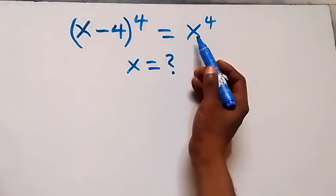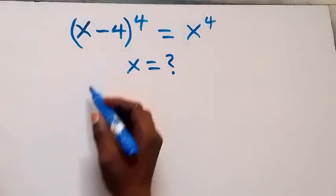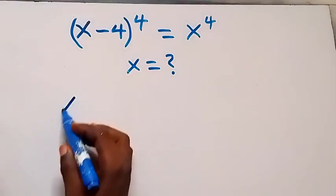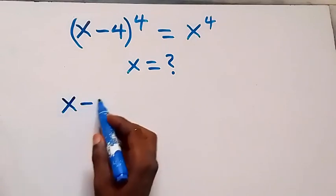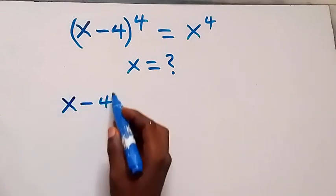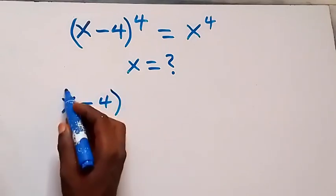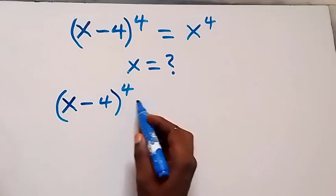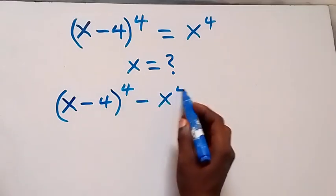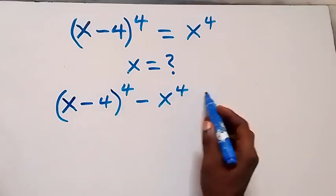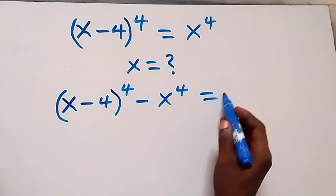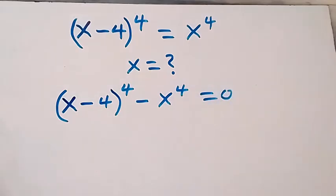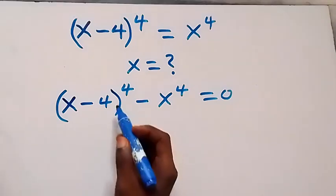From here, let's take x raised to power 4 to this side, and here we have (x minus 4) raised to power 4, then minus x raised to power 4, equals to zero. We can also write this as...